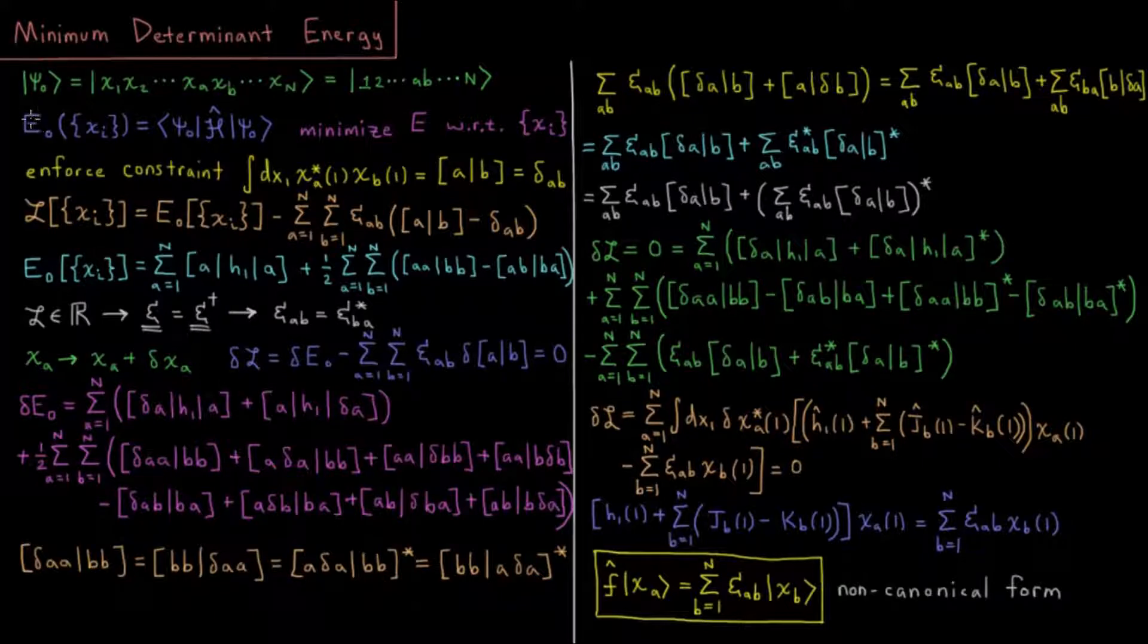This energy is going to be a functional of all those spin orbitals. Each spin orbital has spatial coordinates x, y, and z, as well as a spin coordinate alpha or beta, and the value of these spin orbitals at every point in space for all of the spin orbitals in aggregate is what determines this energy.